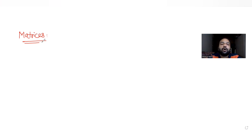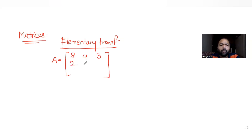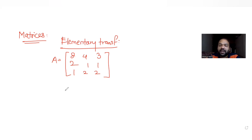Today's question from the topic of Matrices asks us to use elementary row transformations to find the inverse of a matrix A, which is given as [3,4,3; 2,1,1; 1,2,2]. We will understand how to find the inverse using elementary row transformation, and then find the values of x, y, and z for the given equations.